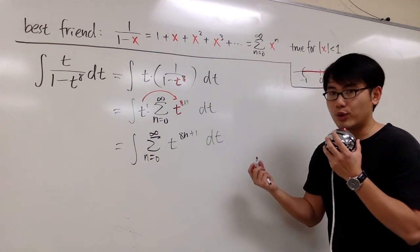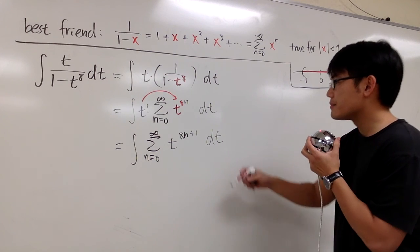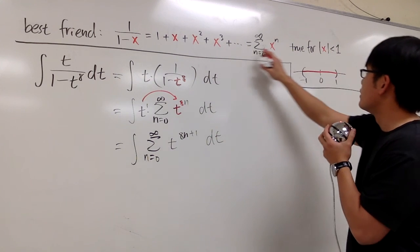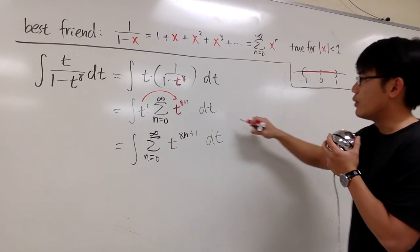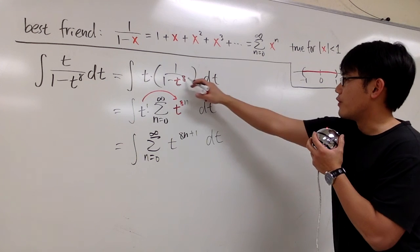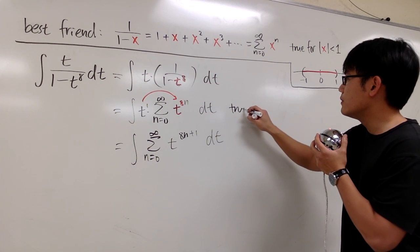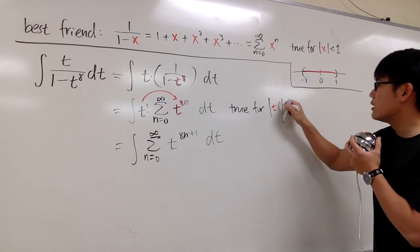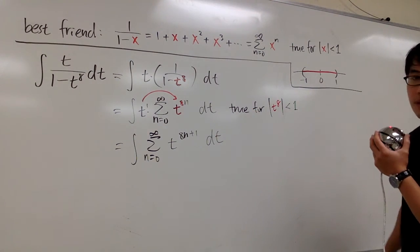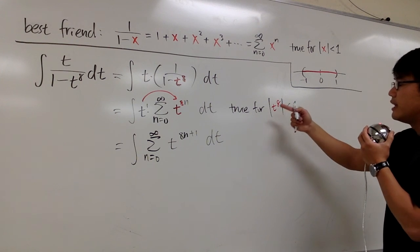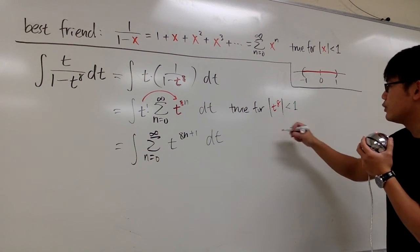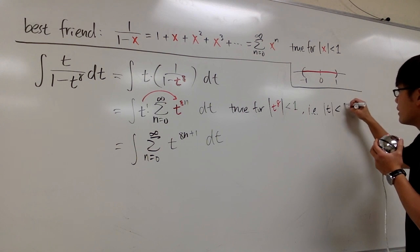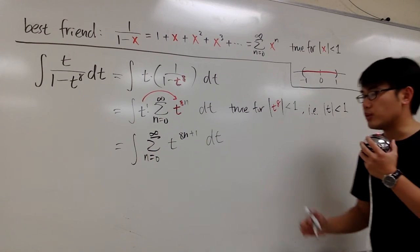I should talk about the radius of convergence along the way. Because we're plugging t to the 8th power into our power series, this is true for the absolute value of t to the 8th being less than 1, which is equivalent — taking the 8th root on both sides — to the absolute value of t being less than 1. That's the radius of convergence, which is 1.